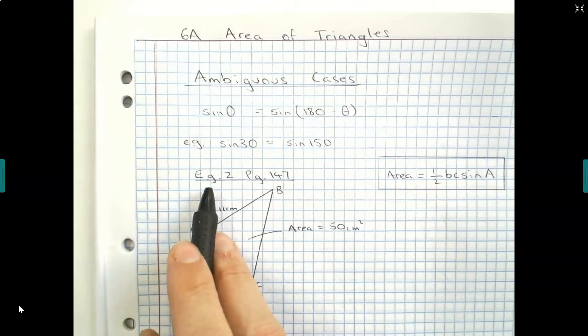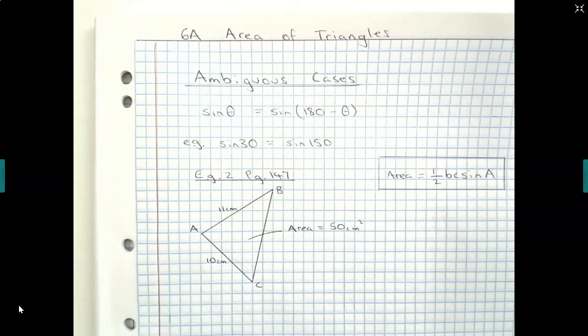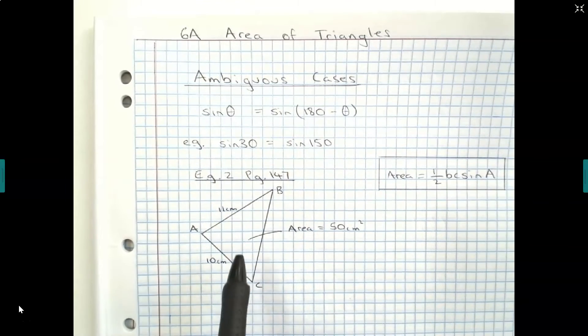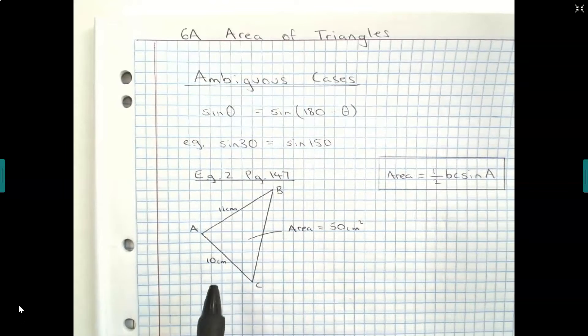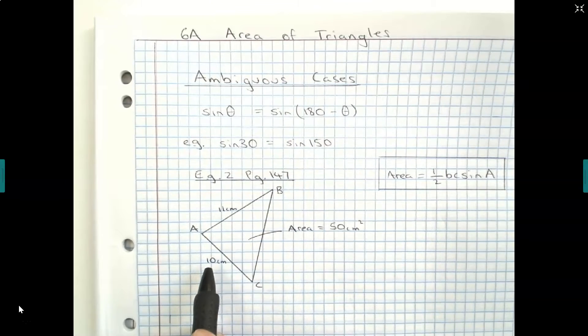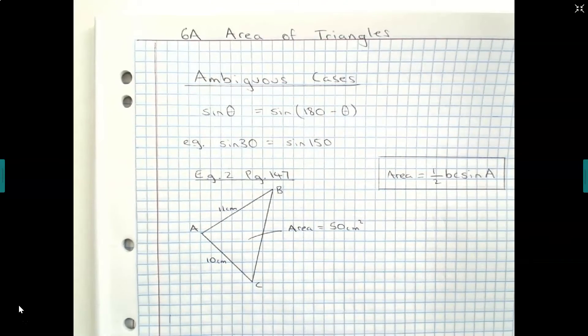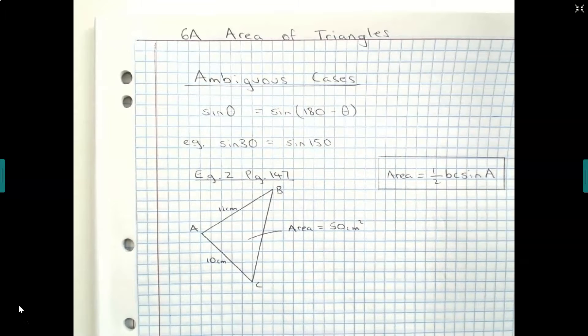So in example 2 on page 147, we are given this triangle ABC, and we're told that side length AB is 11 centimeters and side length AC is 10 centimeters, and that the triangle has an area of 50 square centimeters.